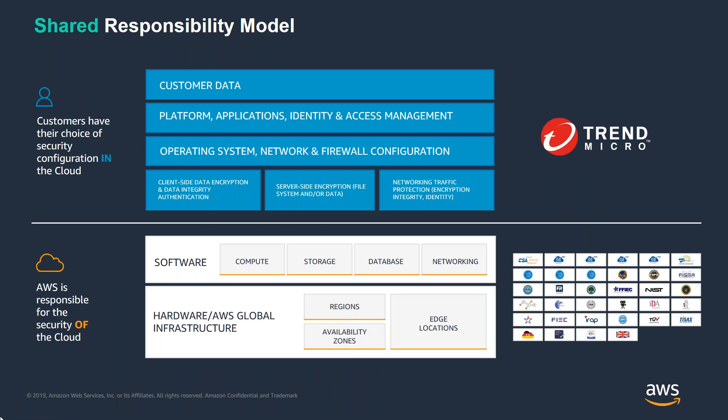We look after security of the cloud, and our customers look after security in the cloud. AWS is responsible for protecting the infrastructure that runs all services offered by the AWS cloud — composed of hardware, software, networking, and facilities. Customers' responsibility is determined by the AWS cloud services and partner solutions they select, which determines the amount of configuration work customers must perform as part of their security responsibilities.